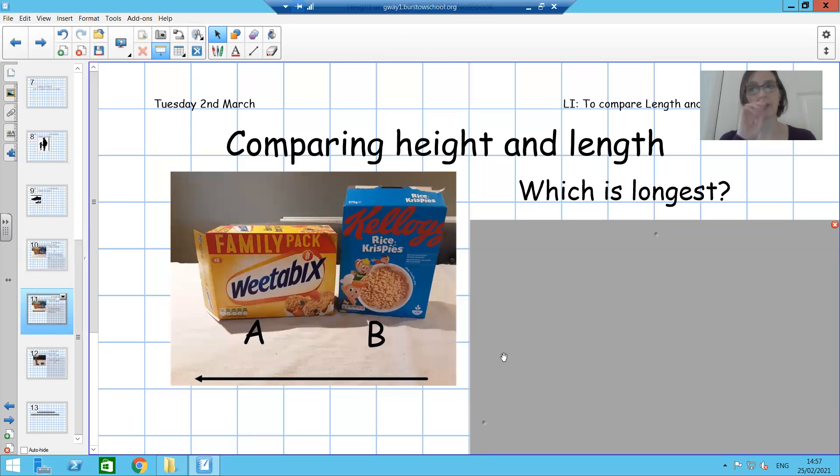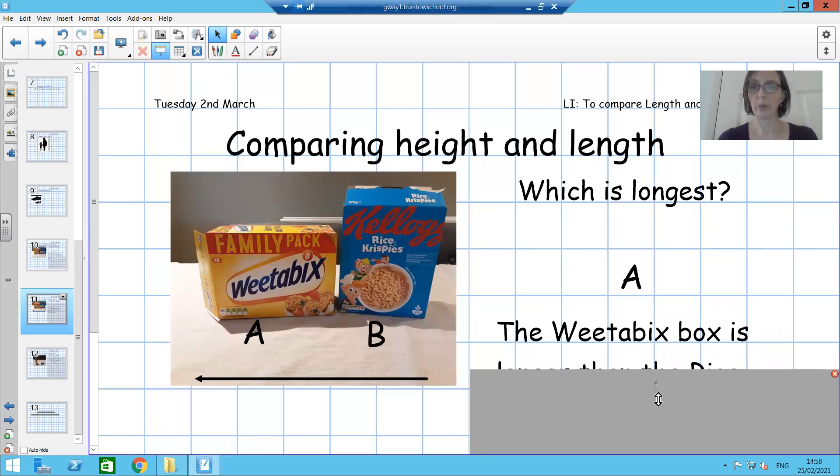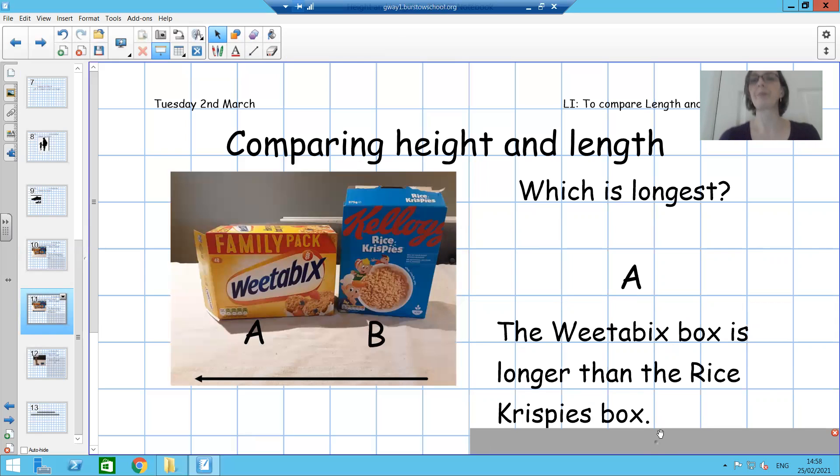Again, if you want to challenge yourself, you could write yourself a sentence to explain why. Did you say A, the Weetabix box is longer than the Rice Krispies box? So while the Rice Krispies box was taller, the Weetabix box is longer, isn't it? Fantastic. Well done if you spotted both of those and you got those correct.